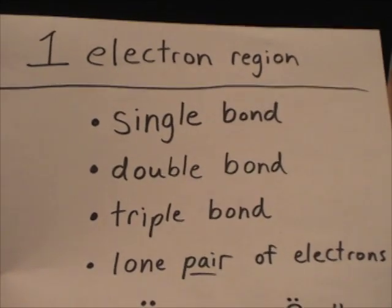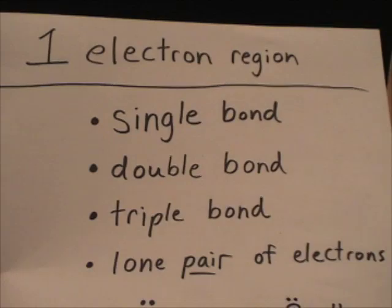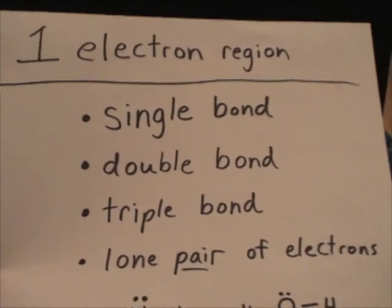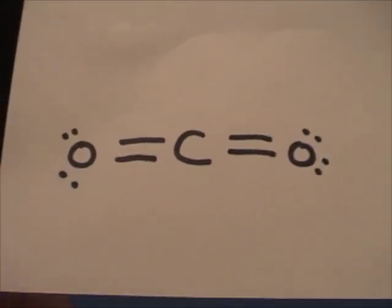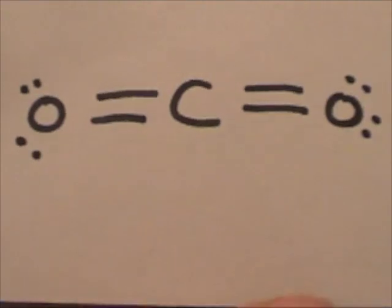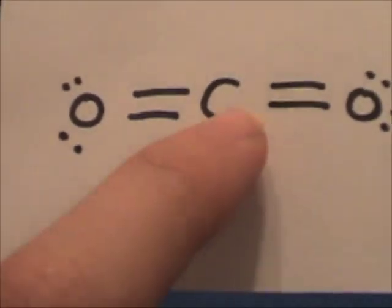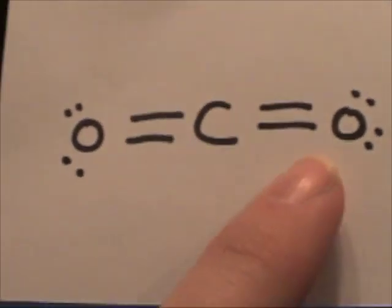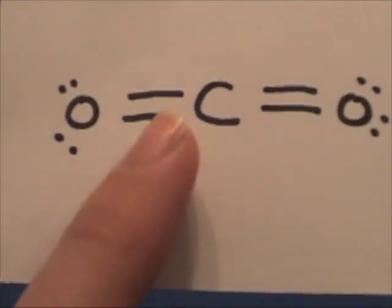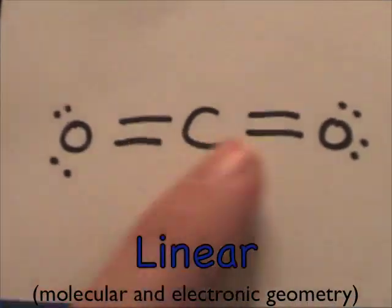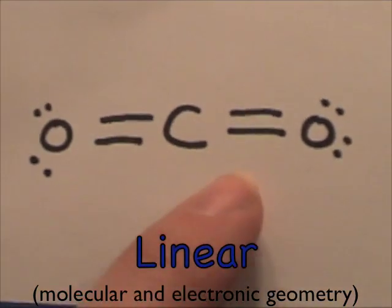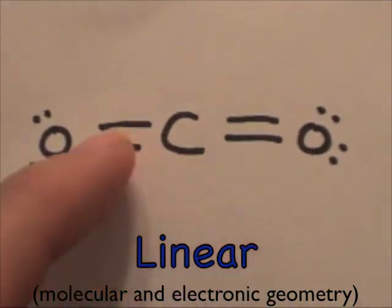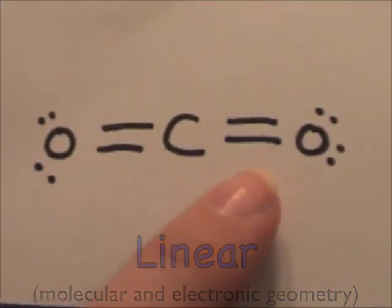Review: a single bond, a double bond, a triple bond, or a lone pair of electrons each count as one electron region. Let's look at carbon dioxide — how many electron regions are around the central carbon? There's a double bond and then another double bond, giving one region and two regions, because a double bond is only one electron region. Those two regions get as far away as possible, forming 180 degrees.